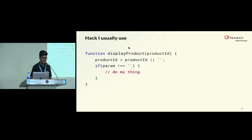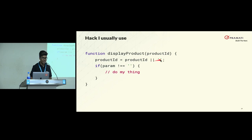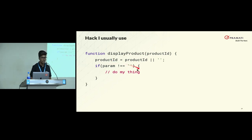The hack I generally use is the OR operator. If my product ID is null or undefined, instead of doing multiple checks, I use the OR operator and assign an empty string. What happens is, if my product ID is zero, empty string, NaN, null, or undefined, it falls back to the empty string. So I can compare using one condition — if product ID is an empty string, then do my thing or else don't do anything.